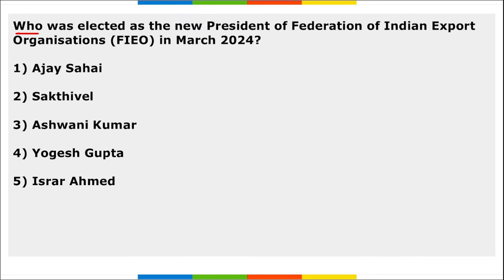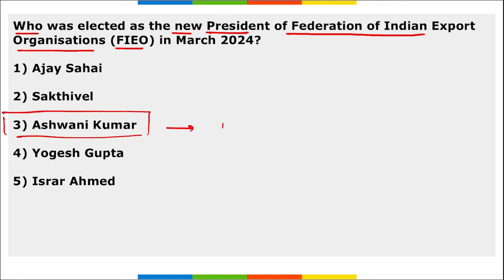Ashwini Kumar was elected as the new president of the Federation of Indian Export Organizations in March 2024, succeeding Dr. A. Sakthivel.